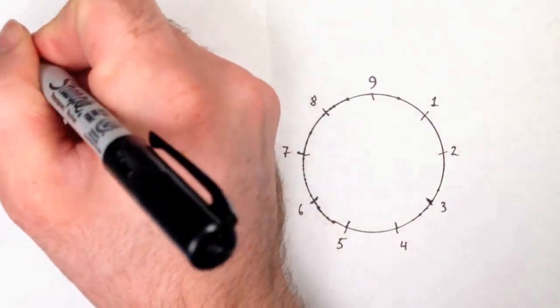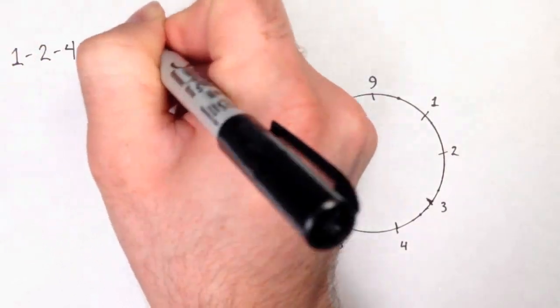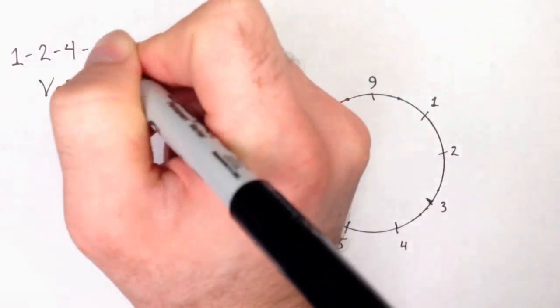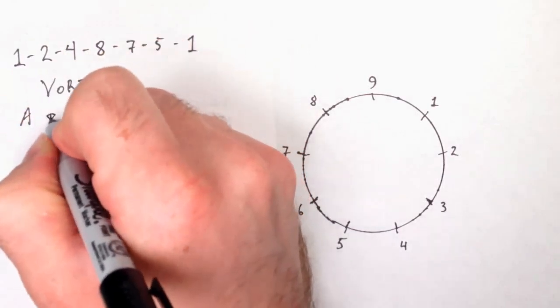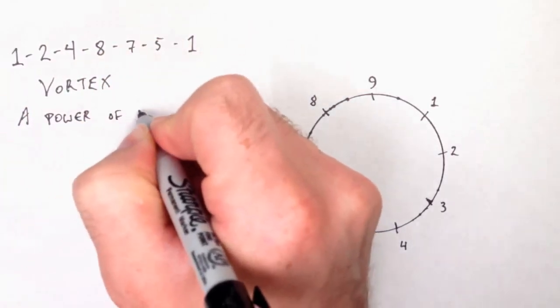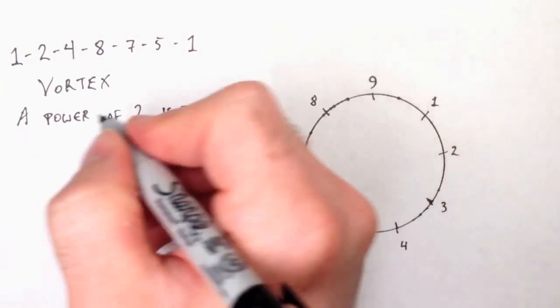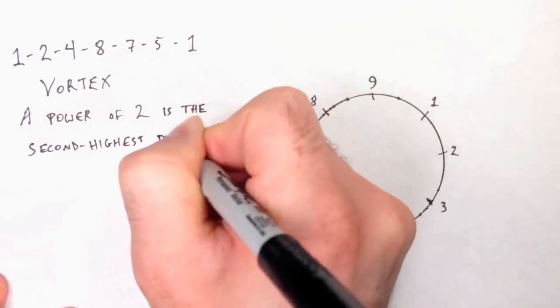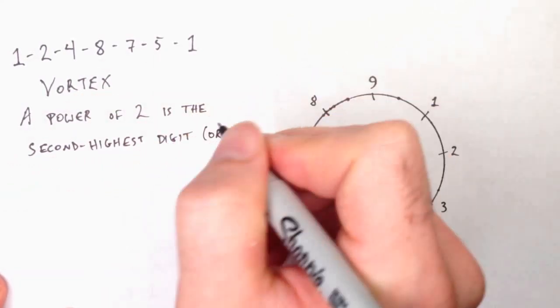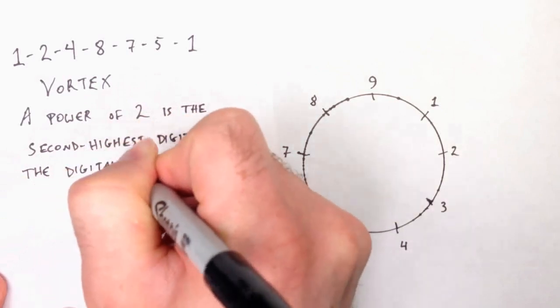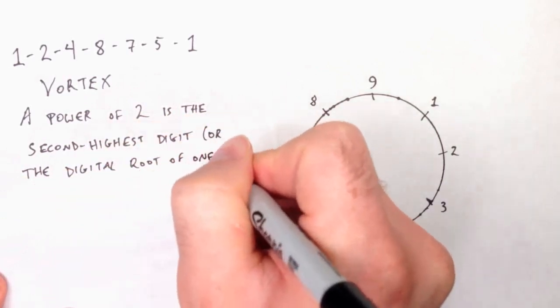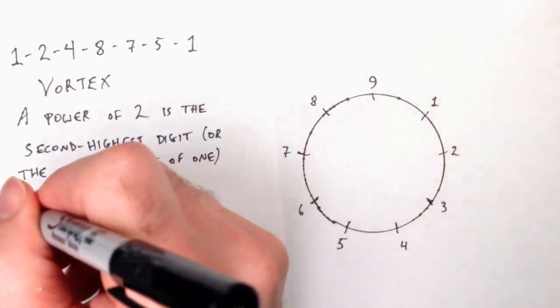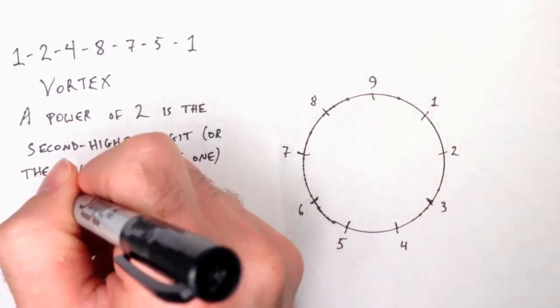Okay, next, let's talk about the vortex. The 1, 2, 4, 8, 7, 5, 1 repeating loop. Once again, this is just a coincidental feature of the base 10 decimal system. If we were using a different base, this wouldn't necessarily work. A power of 2 is the second highest digit in base 10. Or at least the digital root of a power of 2 is the second highest digit. It matters for two reasons. First, because it makes them symmetric, and that's going to matter later. But for the other reason, we're going to need to go through them. So let's start.